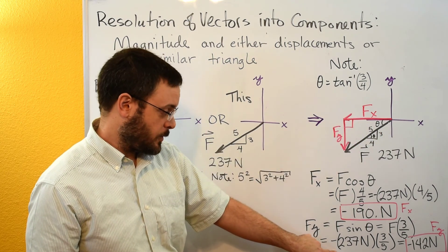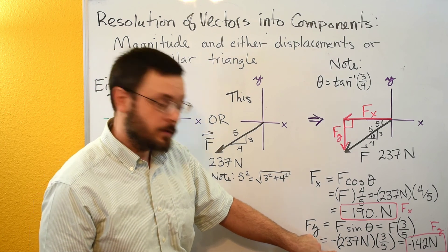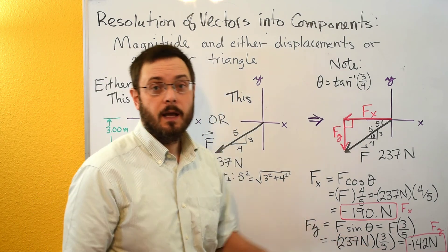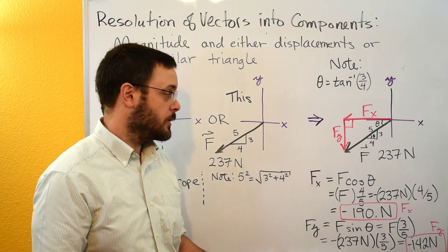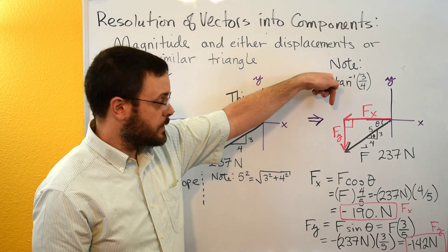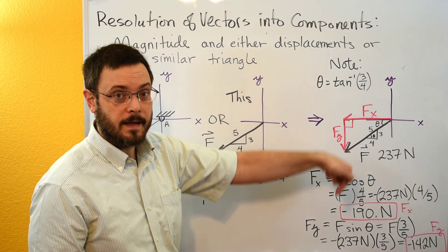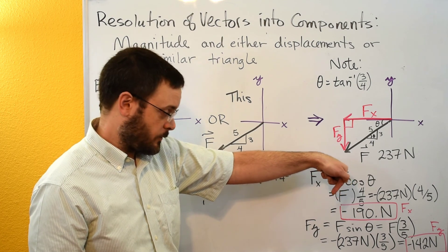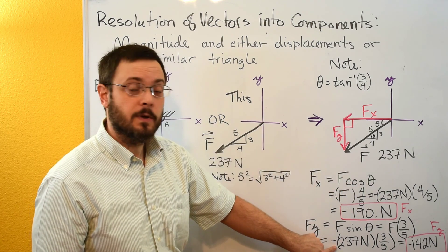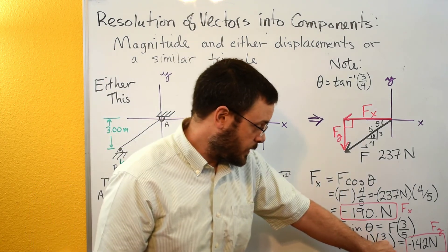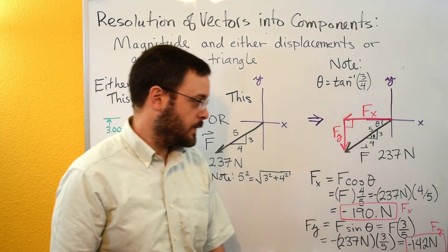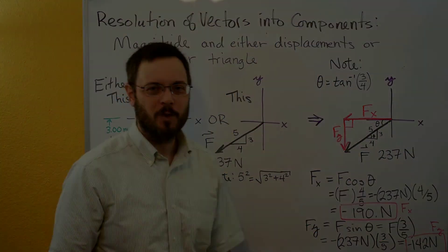So that would give you 237 newtons times 3 fifths. And then again, you've got to go back and check direction. So with your fy, you can see that the fy vector is going down, so it's going to be in the negative y direction. So we go back and put a negative sign in here, and then we get a final answer of negative 142.